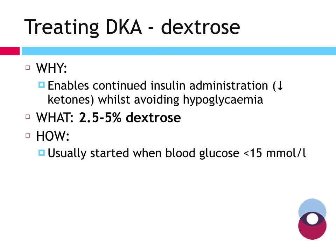Why do we give dextrose to a hyperglycemic patient? Because administering insulin is not just to drive blood sugar down but also to drive down ketone production. We need to continue insulin even as blood sugar falls, to stop further ketone production, while preventing hypoglycemia by supplementing glucose. We're trying to balance the effects of insulin — not letting blood sugar drop too low, while continuing to reduce ketone production. On most protocols, we start adding dextrose at slowly increasing concentrations when blood glucose drops below 15 mmol/L.